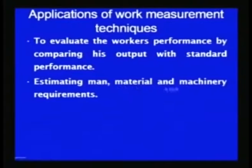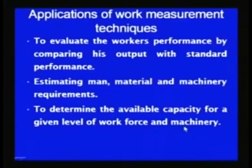Work measurement also helps in estimating the man, material, and machinery requirements. If an organization knows the rate at which things can be produced and the time required for producing a unit product, then this information can be used to quantify and estimate requirements in terms of man, material, and machinery, so that production can run smoothly and future demands can be met. It also helps to determine the available capacity for a given level of work force and machinery.